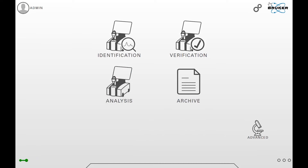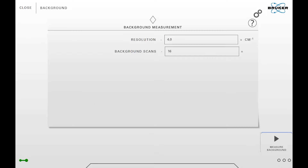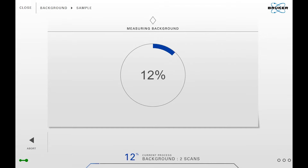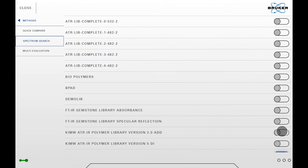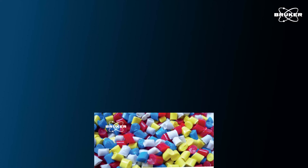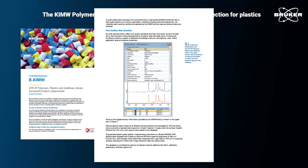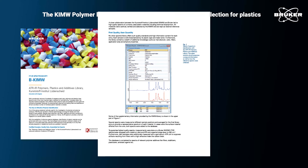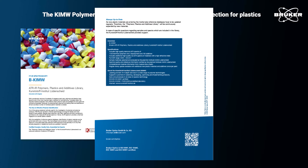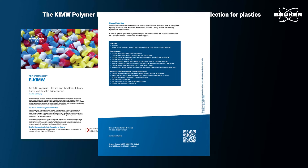To start, simply open the touch-operated user interface and start the identification workflow. The identity of the material will be determined by the comparison of its spectrum against the database. Our database is the exclusive polymer library that was created in collaboration with the Kunststoff Institut Lüdenscheid. It contains reference polymer materials, including commonly used PFAS.